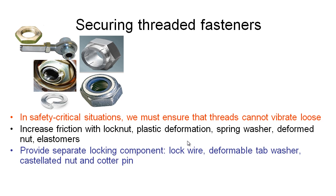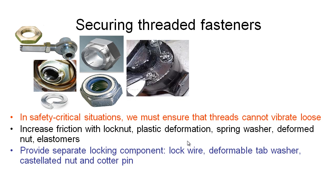Another way to ensure nuts and bolts don't come undone — aside from increasing friction — is to provide a separate locking component. An example commonly seen on aircraft and race cars is lock wire. We drill small holes through the bolt or nut, thread wire through those holes, and wrap it in the correct direction to another nut we also want to keep tight. We twist this wire taut so that if the nut or bolt starts to come undone, it pulls on the wire, tightening the other fastener. To remove, we have to cut the wire first. It's a very reliable and light locking mechanism, though a little fiddly and time-consuming.